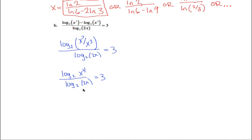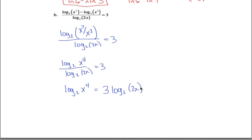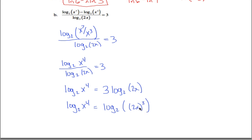Multiply both sides by log base two of 2x to get: log base two of x to the fourth equals three times log base two of 2x. Rather than applying log rule three to bring the four down in front, we apply log rule three in reverse on the right side: move the three up into the exponent to get log base two of x to the fourth equals log base two of (2x) cubed. Be careful: the entire 2x must be cubed, not just x — so write it with parentheses.